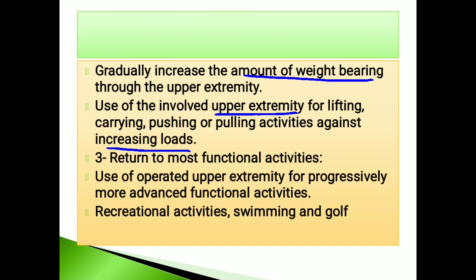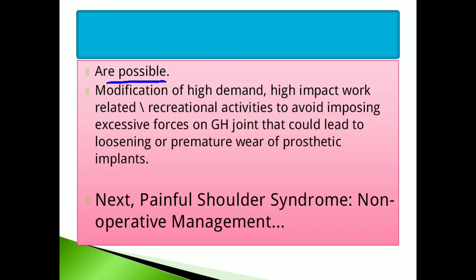The goal is return to most functional activities. Use the operated upper extremity for progressively more advanced functional activities including recreational activities — swimming and golf are possible. However, for athletes or sportsmen, modification of high-demand, high-impact work-related and recreational activities is necessary to avoid imposing excessive forces on the joint that could lead to loosening or premature wear of the prosthetic implant.